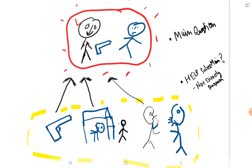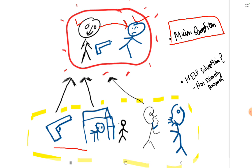Suppose this is Kalu and this is Nilu. There is an allegation on Kalu that he has killed Nilu. So the main question here is whether Kalu has killed Nilu or not. To solve this main question, we will take the help of some proofs — some facts.